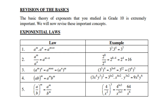Law number 5: (a over b) to the power m — you can also distribute the m into a and into b. For example, (4 over x squared) to the power 3 gives you 4 to the power 3 over x to the power 2 times 3, which is 64 over x to the power 6.